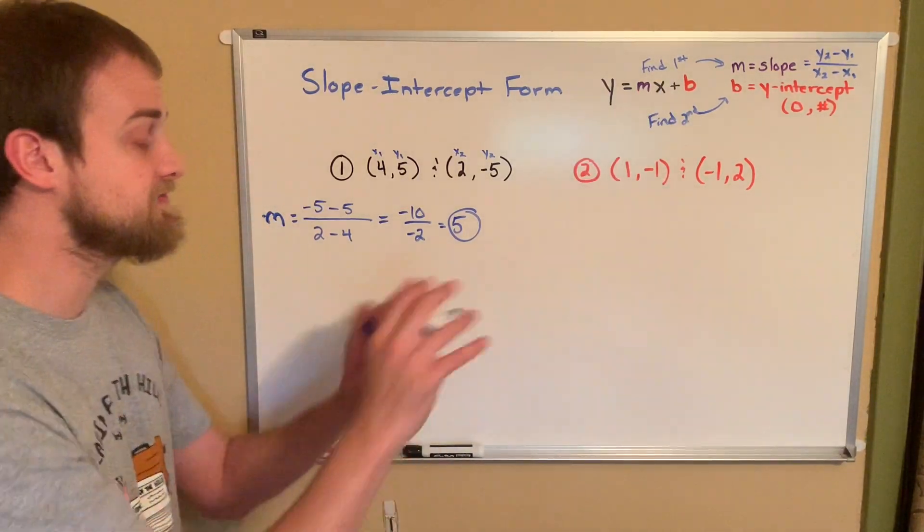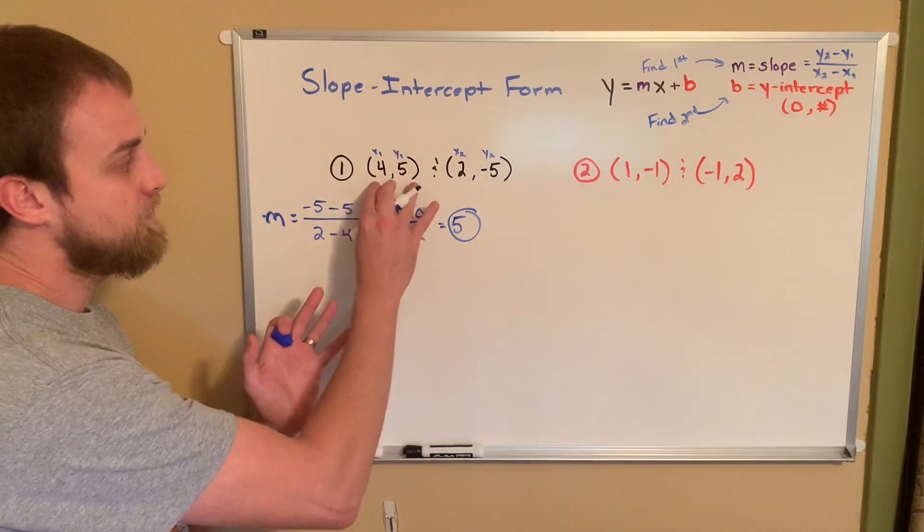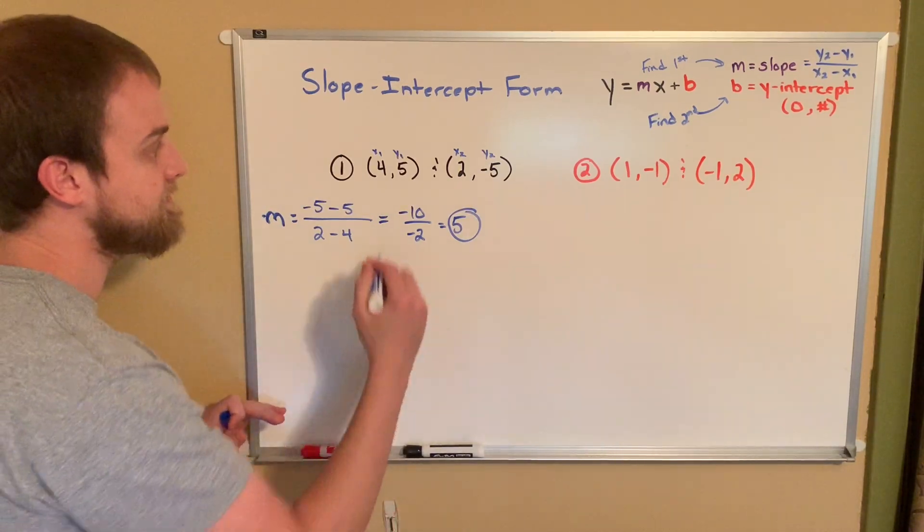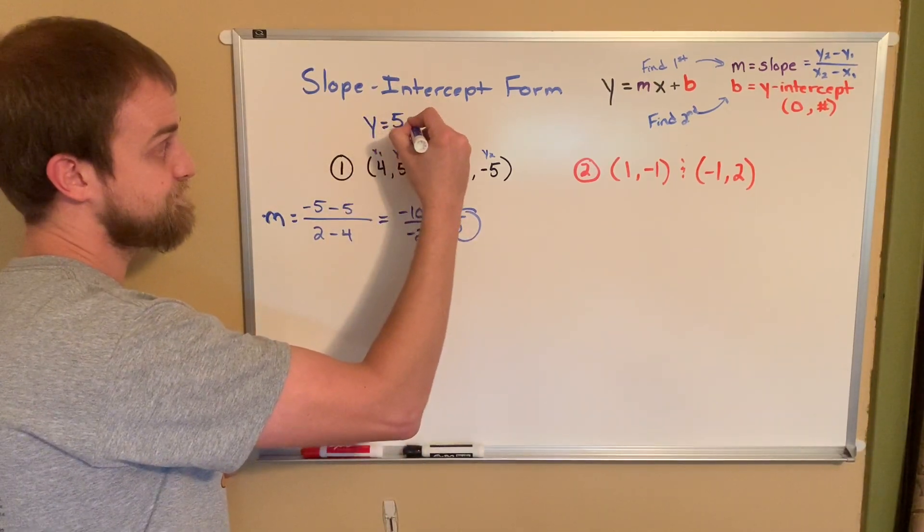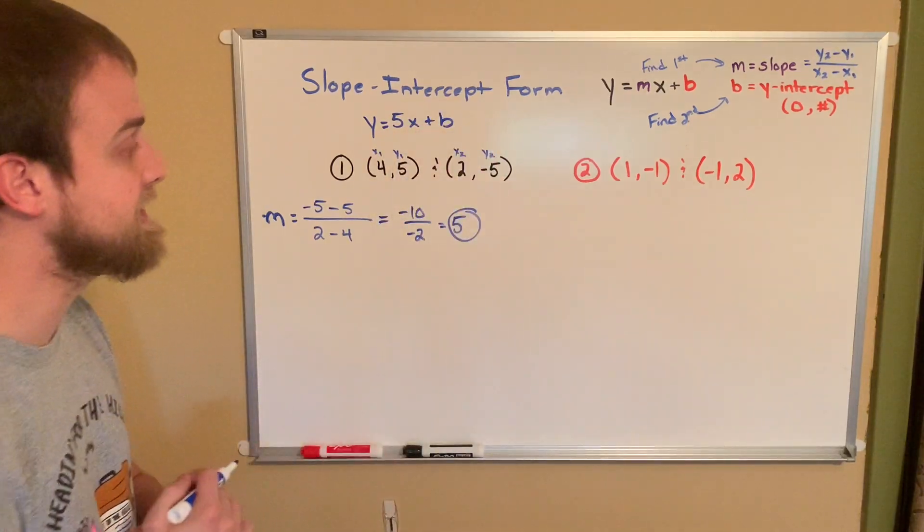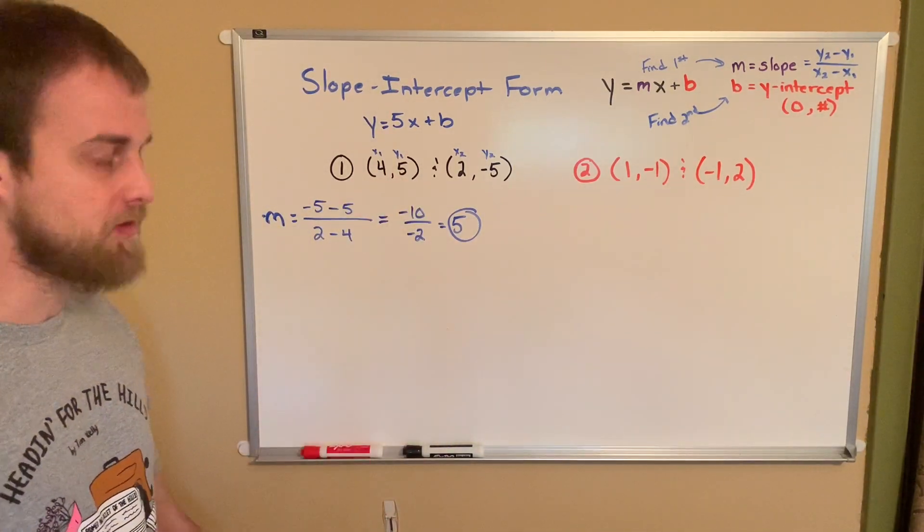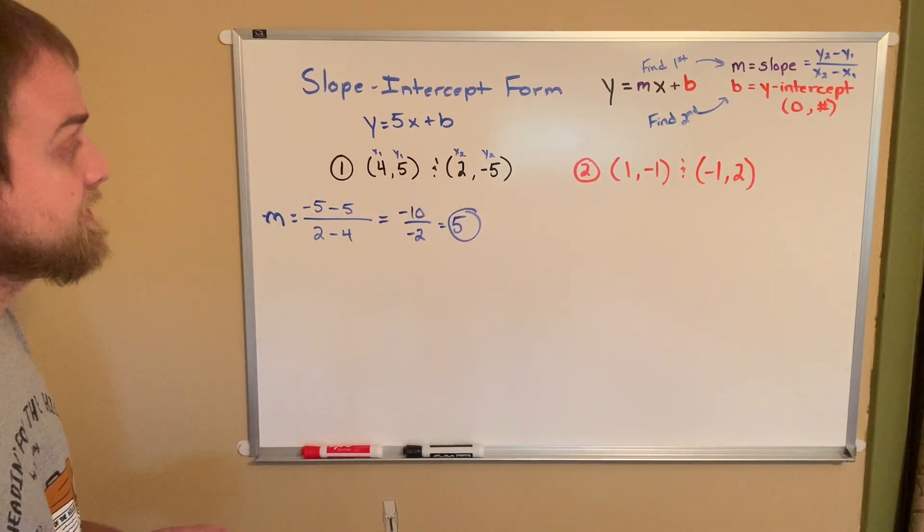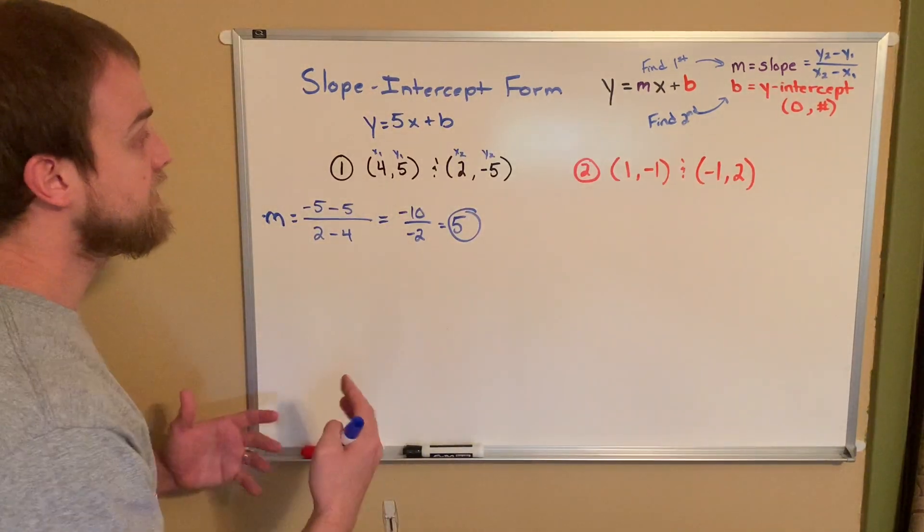So we're already halfway home. We have half of the information we need. We have the m. So now we need to use this to find the b. Well, if you watched my other video before this, now that we have our slope, we can actually pick either ordered pair to help us find the b. Let's do that. Remember, it's going to be y equals m is my slope times x. Now I don't know my b, so I'll just write plus b to kind of take its place. So I'm ready to substitute.